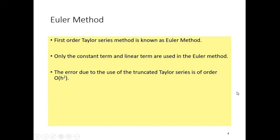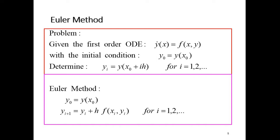First of all, we have the Euler method, which is a first-order Taylor series method. It only has the constant term and the linear term, and the error is the truncated Taylor series of order two. Given a first-order ODE where y prime of x equals f of x, you should make y prime of x the subject of your formula, so the other side will be your f of x. These are your initial conditions: at x zero, your y is given by y zero.